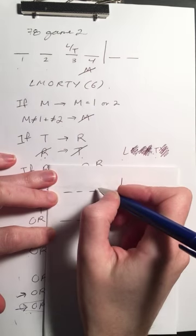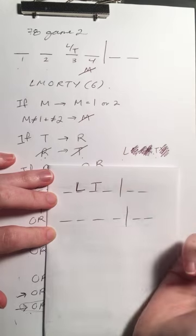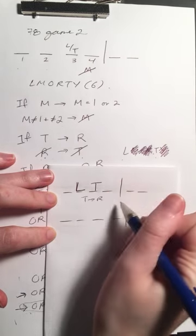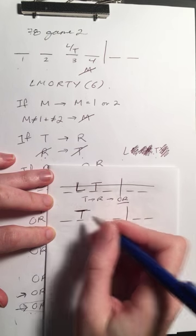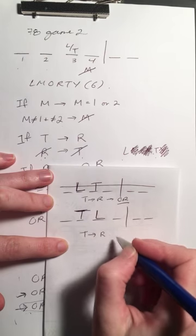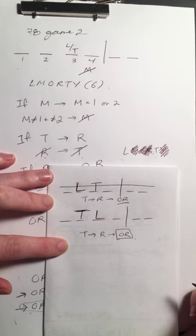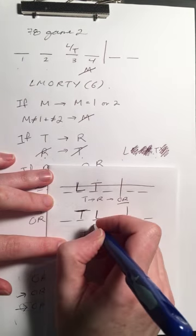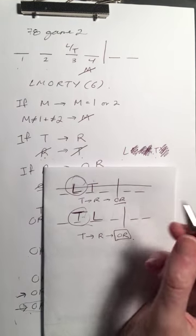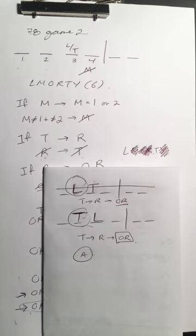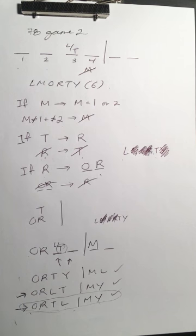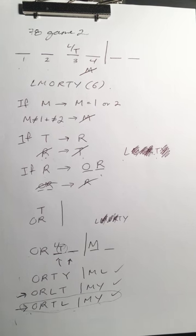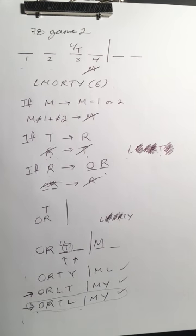If L is assigned to 22, T would have to be in 23. If T is assigned, R is assigned. If R is assigned, O has to be right before R — no room for that. If T is assigned to 22, L is assigned elsewhere — same problem: T in means R in, and O has to be right before R. So neither L nor T can work in spot 22, but L is the only one listed as an answer choice, making A the correct answer. Let me know if you have any specific questions about this game or how to generalize these strategies to other game types.